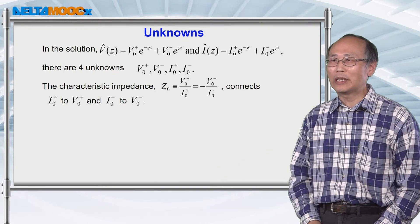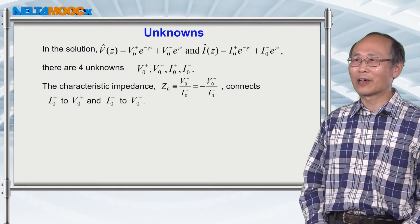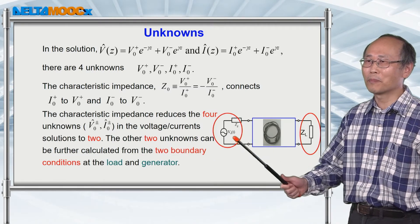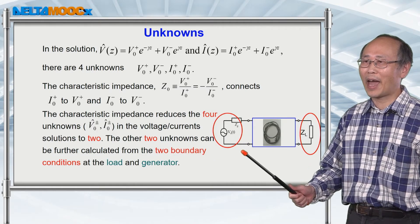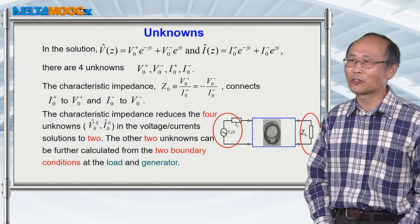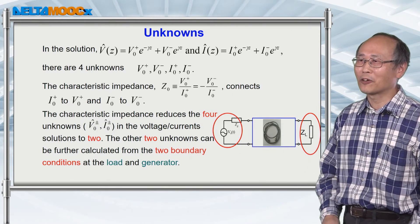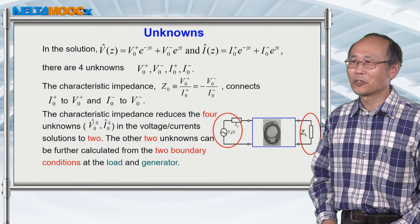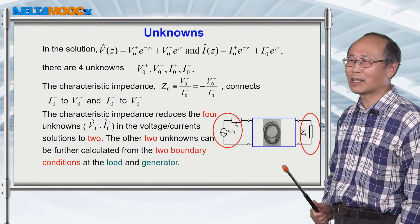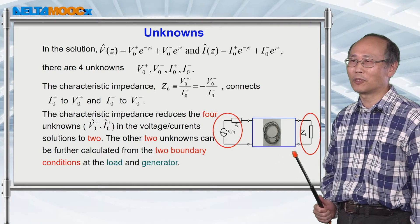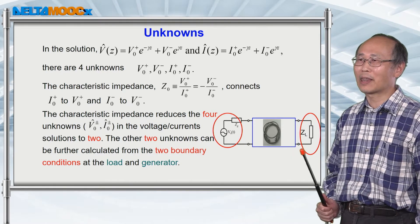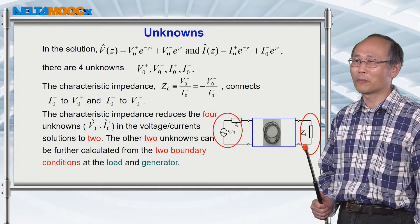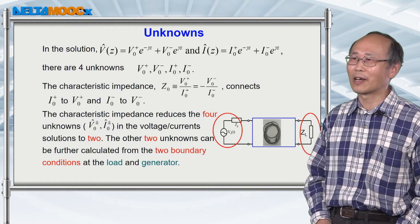So we only need two more boundary conditions to solve the remaining two unknowns. One possible boundary condition is to add a generator circuit into this transmission line. The other boundary condition is to add a load impedance into this transmission line. On the next page, I will be adding this load impedance and try to understand the reflection and transmission of the signal at this boundary and also the power delivered to this load impedance.